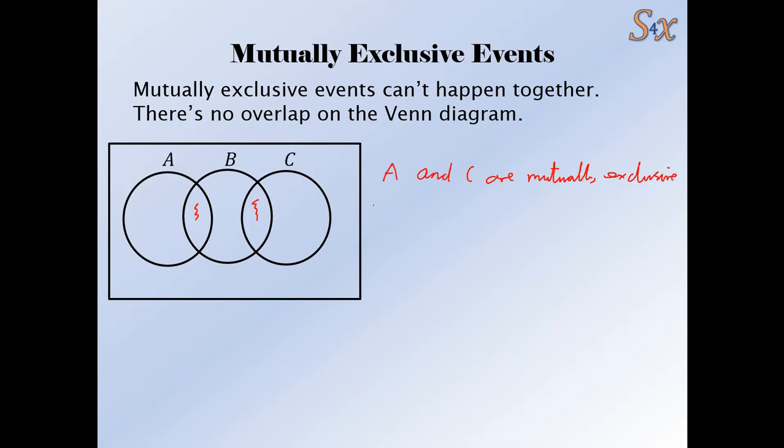We could also say that the probability of A and C is zero because there's no overlap. There's nobody in that overlap between A and C because they're mutually exclusive events. And that means there's a probability of zero there.